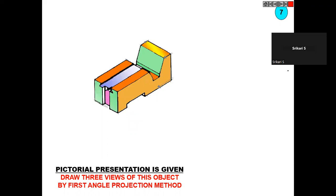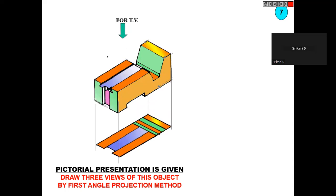One more figure — this is about the top view. Here you can observe orange and yellow colors. Here also you have a V-shape — one portion and in the center you have some groove. The same type of portion is on this side also. This is about the top view. Here there is a hidden portion, so definitely here you will get hidden lines.